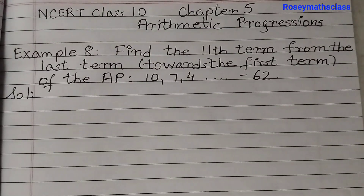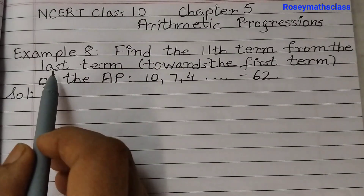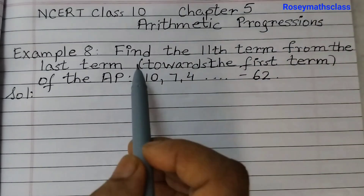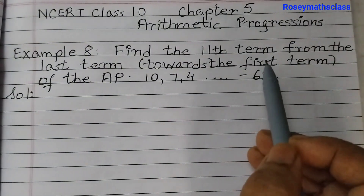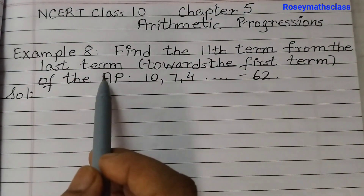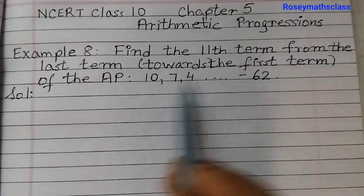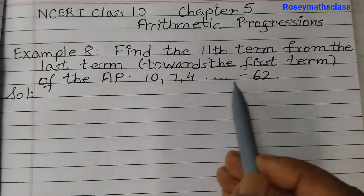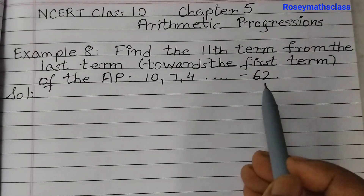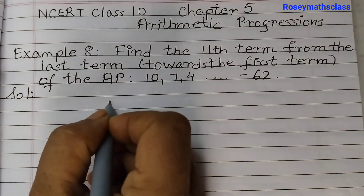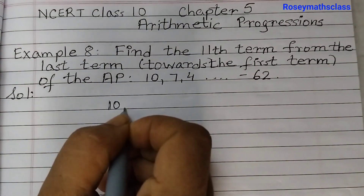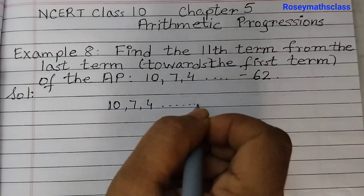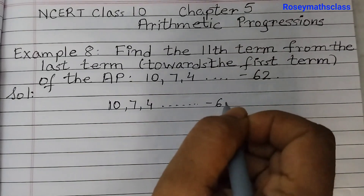Hello students. In this video we shall discuss example number 8 of chapter 5, arithmetic progressions. Find the 11th term from the last term towards the first term of the AP: 10, 7, 4, and the last term is minus 62.